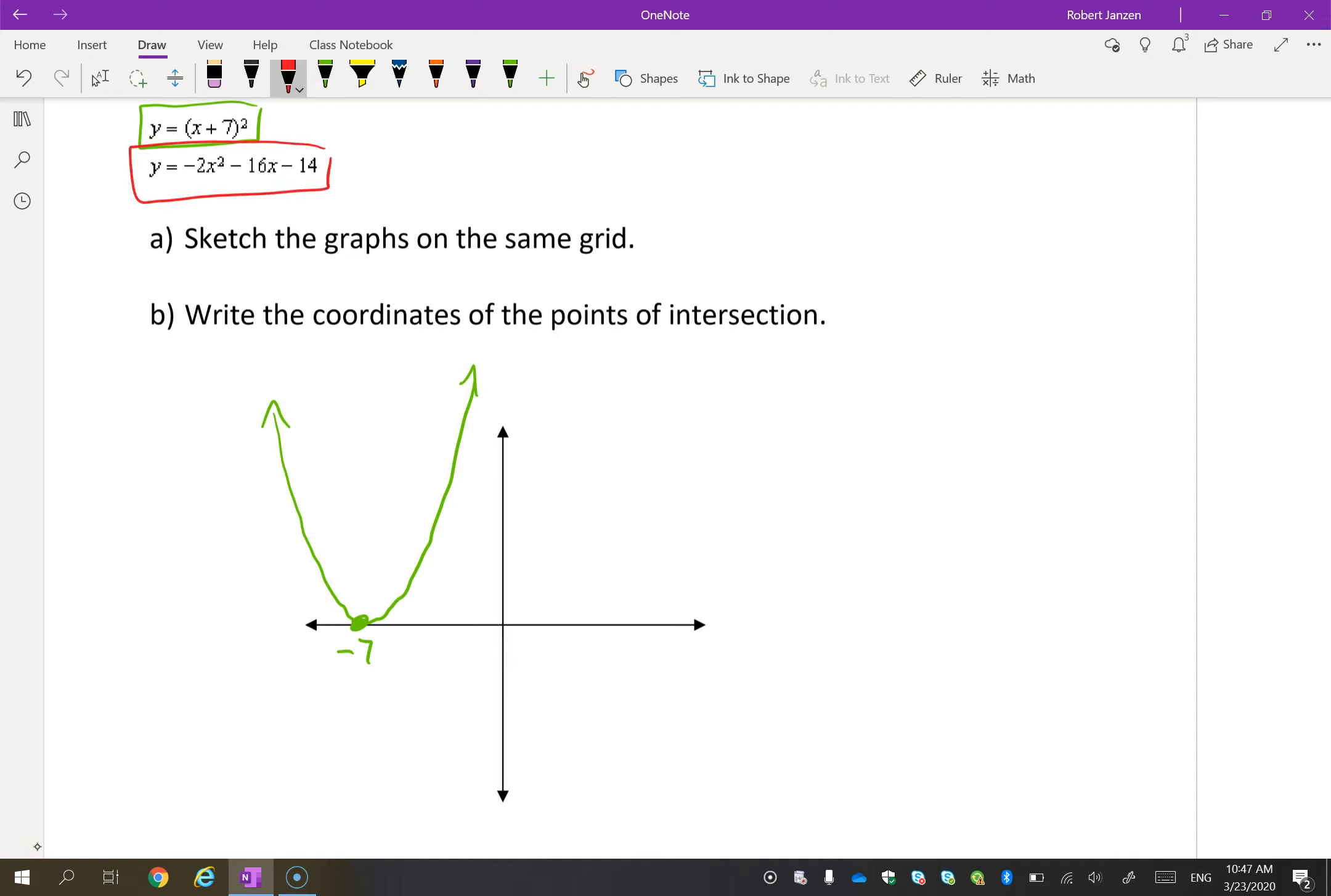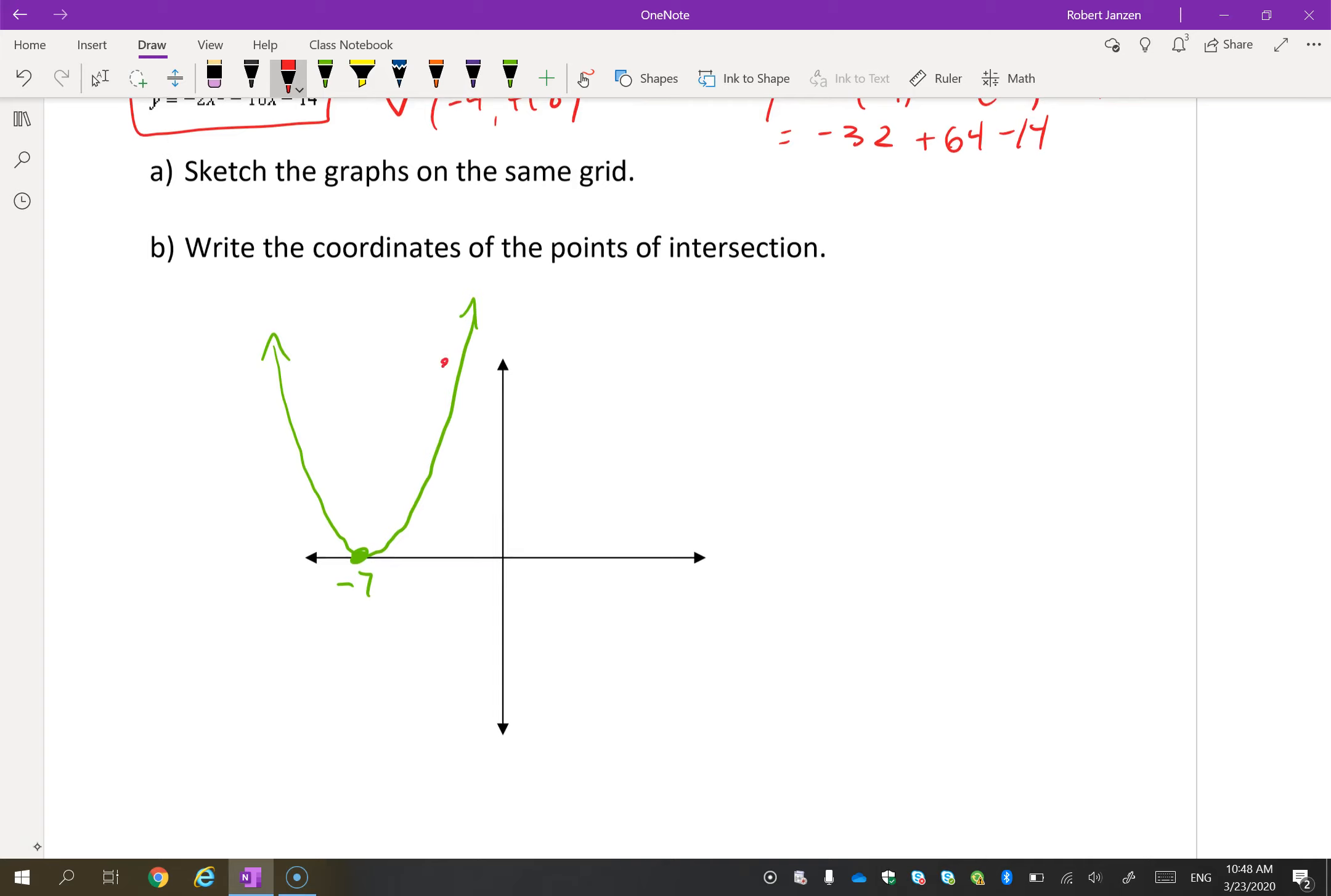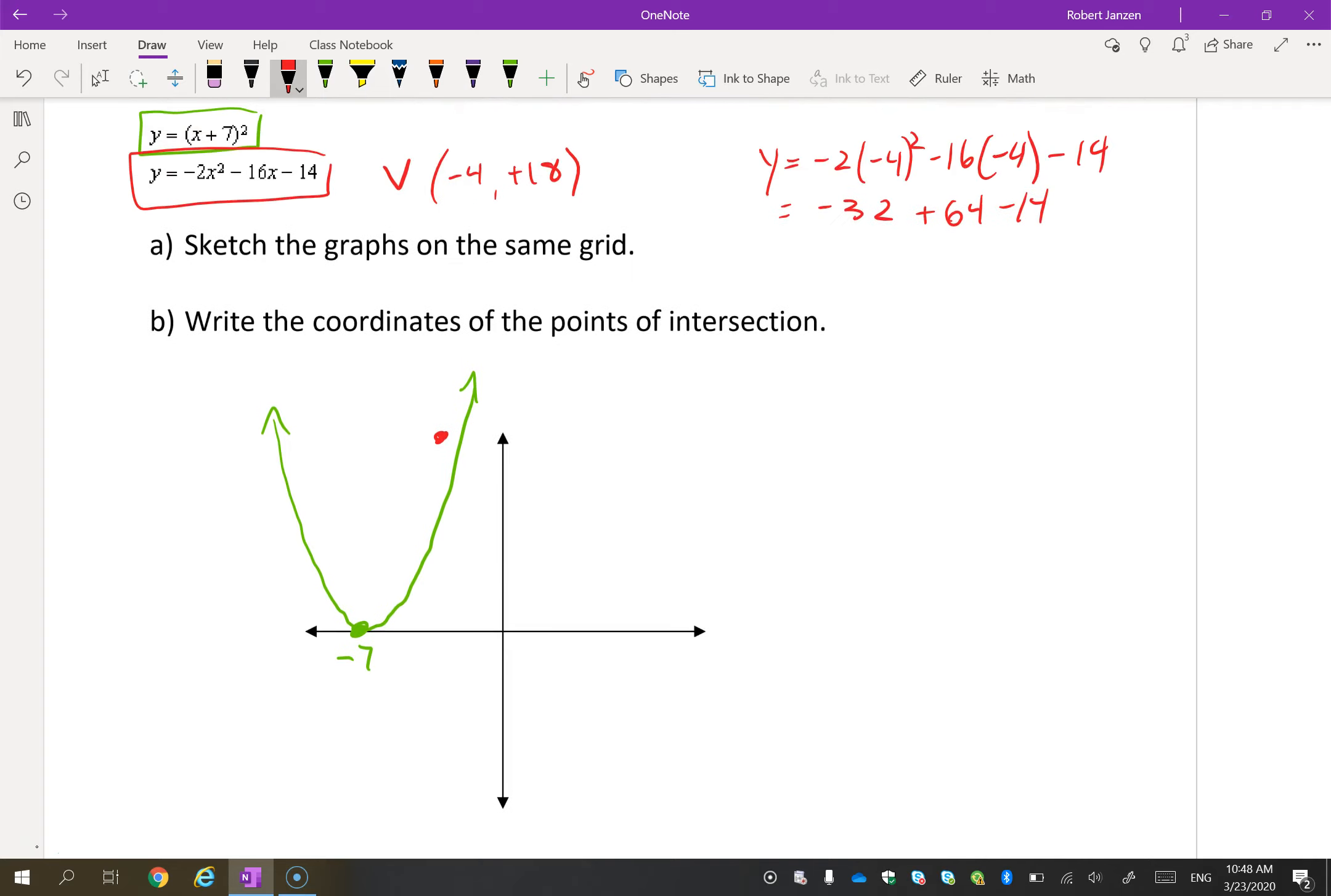And then what does this graph look like? Well, very quickly, the vertex would be negative b over 2a, so I think this is going to be negative 4. And then if we put that into the equation, you're going to get -2 times (-4)² minus 16 times (-4) minus 14. So this is -32 + 64 - 14. So I think that's positive 18. So negative 4 positive 18, it's going to be somewhere over here. And this is an equation that opens down.